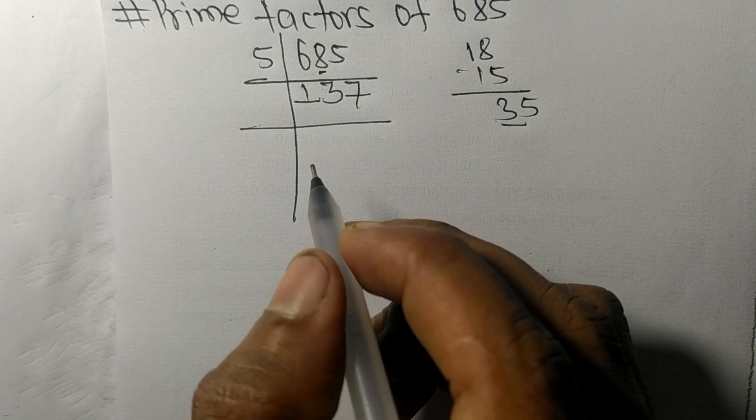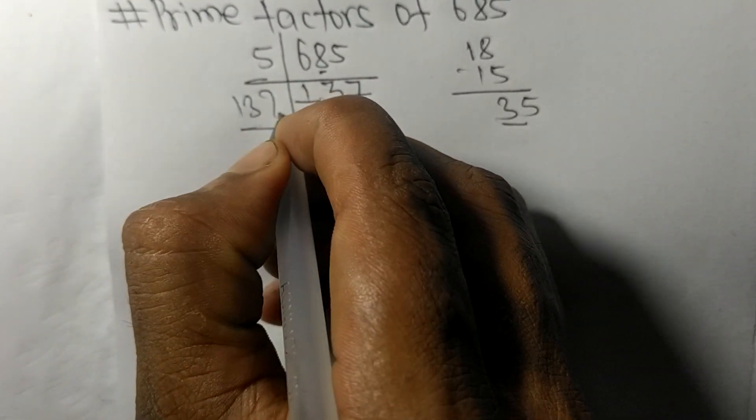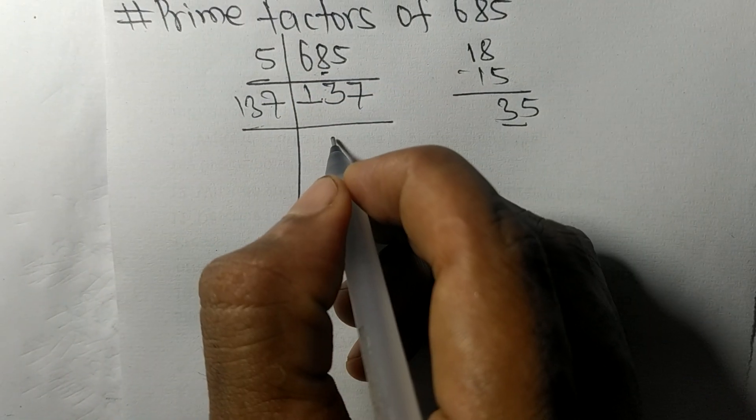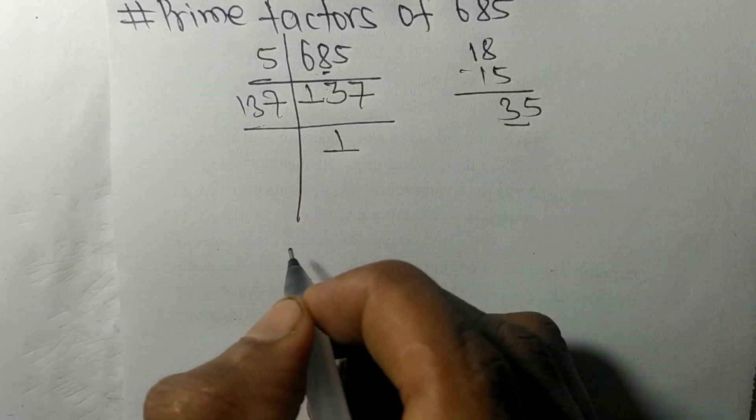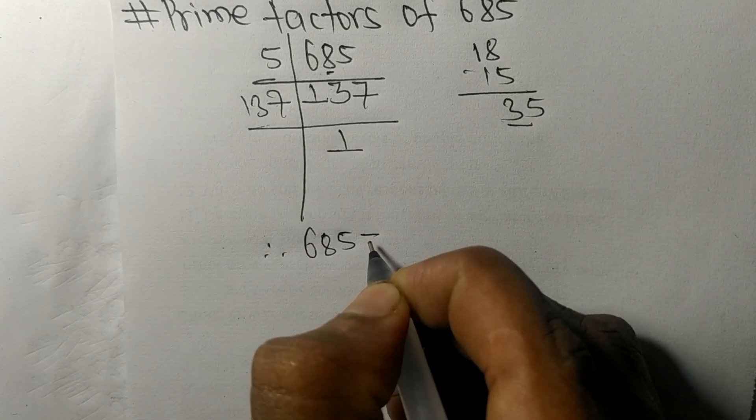Which is our prime number, so it is divisible by 137 itself and we get here 1.